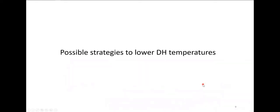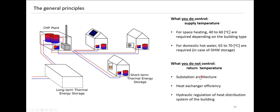Once we have observed this, what can we do? Before going further, I'll recap some very basic principles of district heating networks. In its simplest version, a power plant provides hot water at the supply temperature, distributed through insulated pipes to buildings. Each building has a substation where it uses the heat for space heating and domestic hot water. The water returns at a lower temperature back to the plant through insulated pipes. As an operator, what you control is the supply temperature.